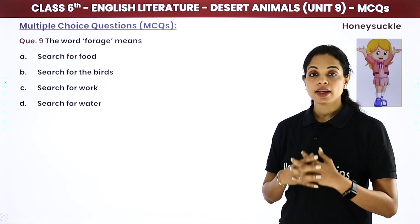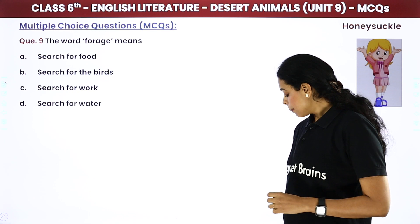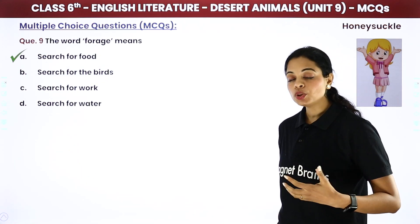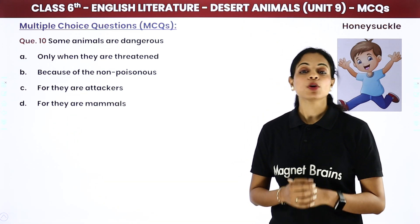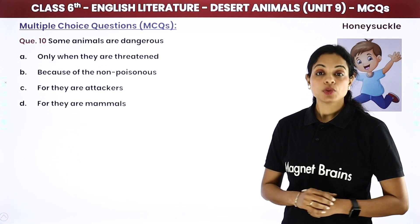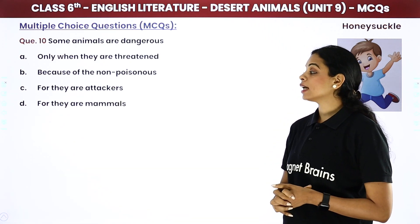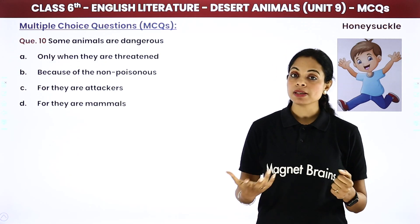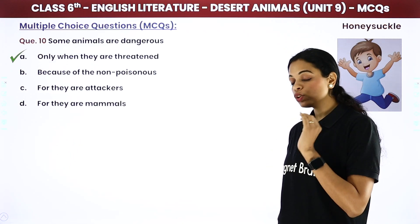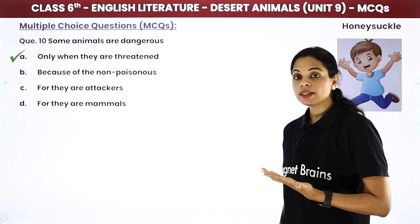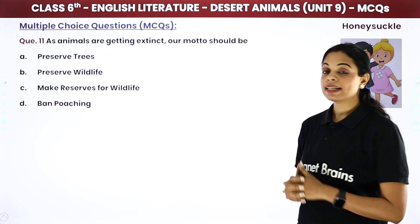The word 'forage' — forage का मतलब क्या होता है? Search for food — जब आप खाना ढूंढते हो, उसको बोलते हैं forage. Some animals are dangerous — कुछ animals dangerous होते हैं, लेकिन सिर्फ तब जब वो अपने आपको बचाना चाहते हैं — only when they are threatened. जब आप उन्हें डराते हो, सिर्फ तब वो attack करते हैं।